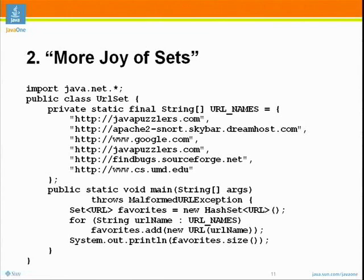There are six strings but only five unique ones. So I'm going to guess this program creates five URLs — and when you put things into a HashSet, duplicates find themselves. So I'm going to guess the answer is five.